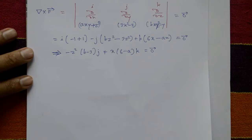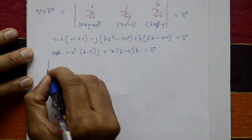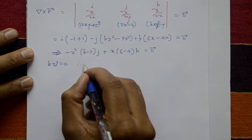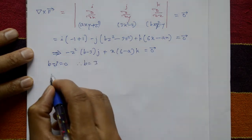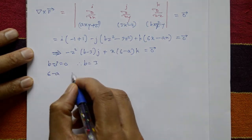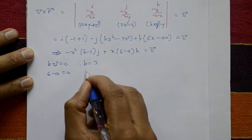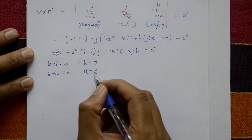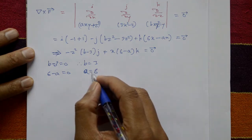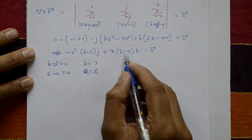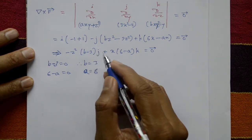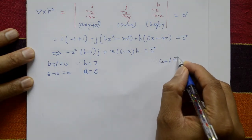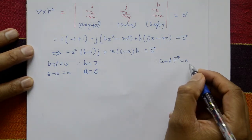For curl F to equal zero, we need b - 3 = 0, giving b = 3, and 6 - a = 0, giving a = 6. So with a = 6 and b = 3, curl F = 0 and the field is irrotational.